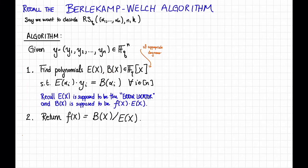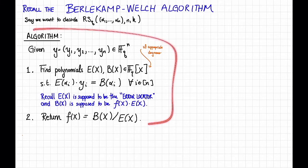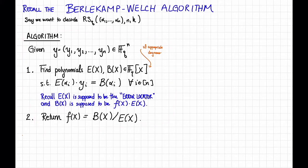So that was step one. We did some polynomial interpolation to find these polynomials, and then we returned f(x), which we proved would always be equal to b(x) divided by e(x). To give us some inspiration for how to generalize this to list decoding, I'm going to recast this algorithm in terms of bivariate polynomials.